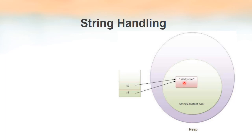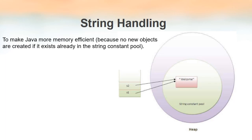When we again use the same word 'welcome' as the content of a second literal, say 'String s2 = "welcome"', JVM checks the String Constant Pool again and finds that 'welcome' already exists. So instead of creating a new string literal, JVM links s2 to the already existing string 'welcome'. This is done to make Java more memory-efficient — no new objects are created if the string already exists in the pool.